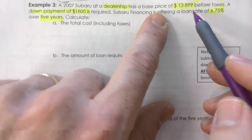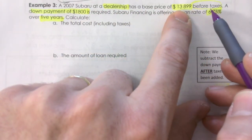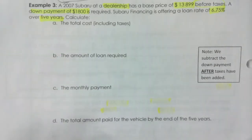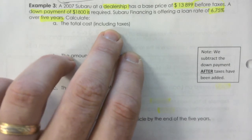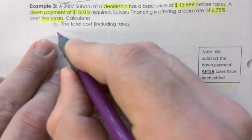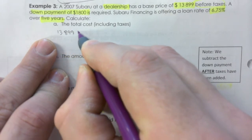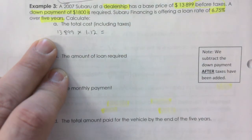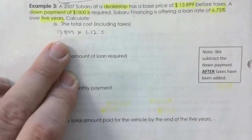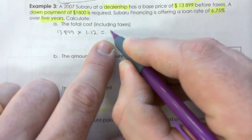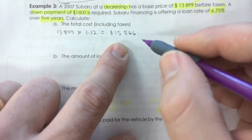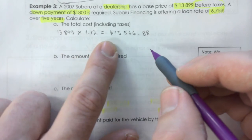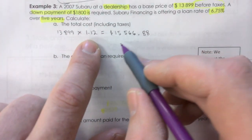When financing, we don't always have to worry about taxes, but this example does include taxes. The total cost including taxes: $13,899 at a dealership gets 12% tax right away. So we calculate that and get $15,566.88. Watch your rounding — but that's the total cost of the car.